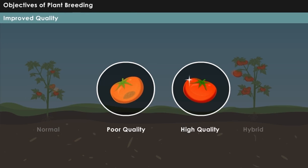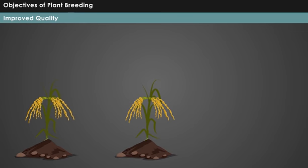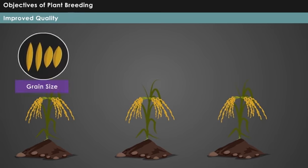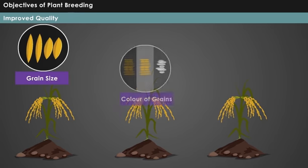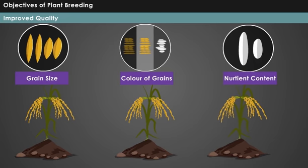Improved quality: Sustaining the quality of plant produce is one of the important aspects of plant breeding. Quality characteristics may generally vary from one crop to another. For instance, through plant breeding, the quality of rice in terms of grain size, color and nutrient content can be improvised.